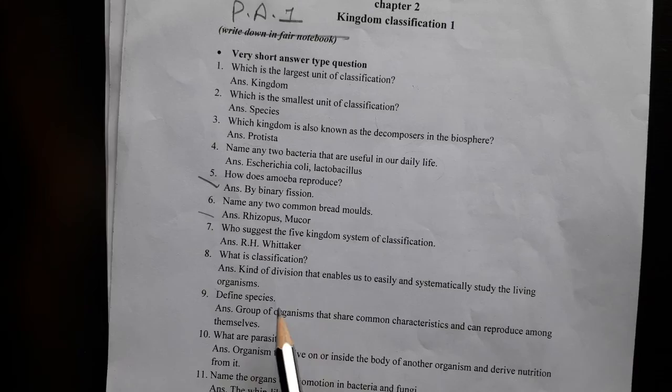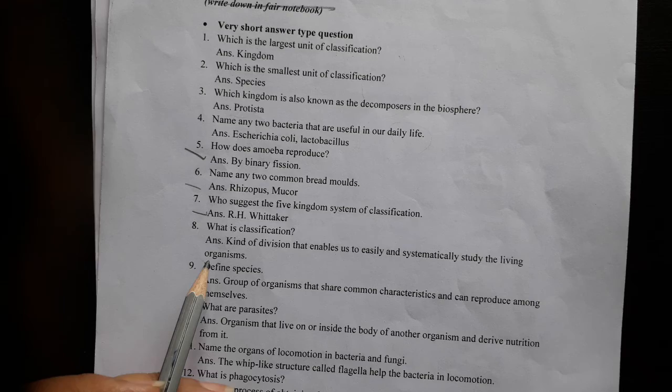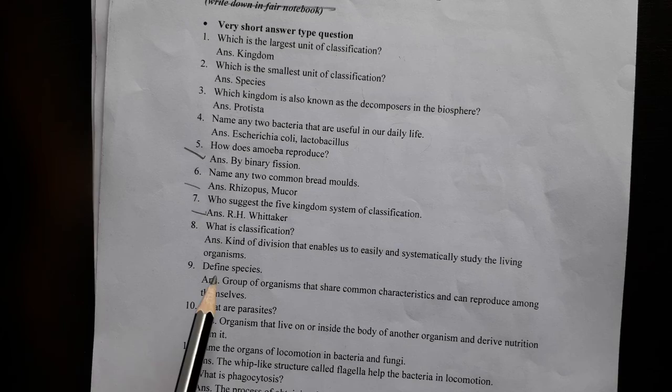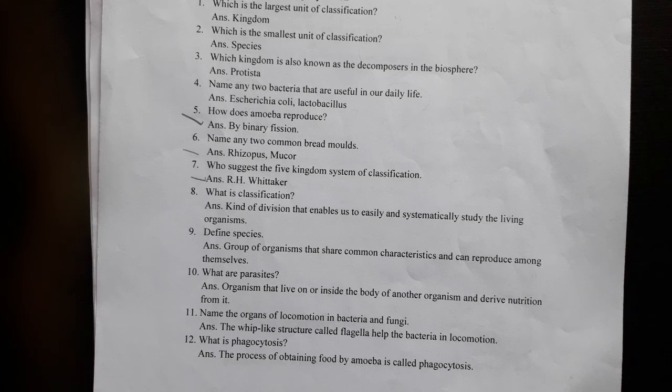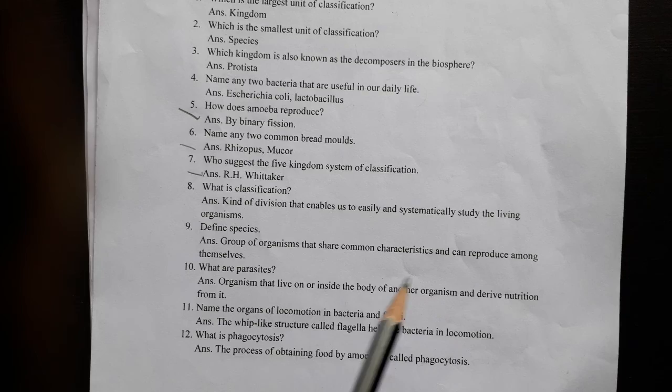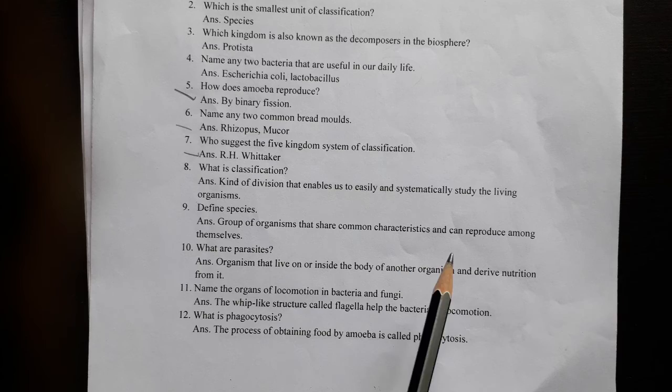Five kingdom classification. Classification is the kind of division that enables us to easily and systematically study living organisms. Species is a group of organisms that share common characteristics and can reproduce among themselves.